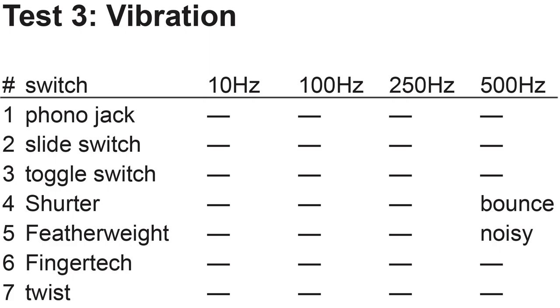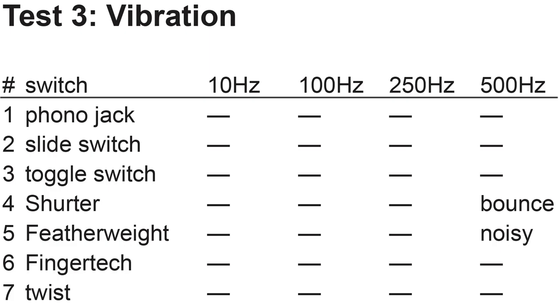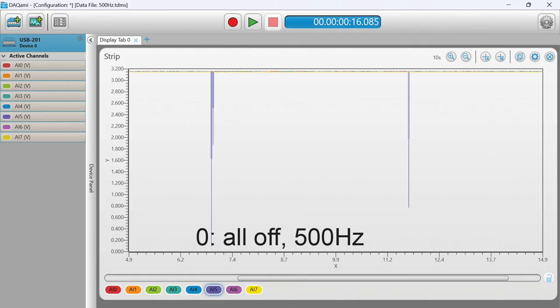For the vibration tests, all switches were immune except at 500 Hz. I recorded two very short on spikes from the Featherweight switch. And when testing the Featherweight switch specifically, I saw a lot of noise at 500 Hz plus a bounce that came from a different switch, the Scherter.